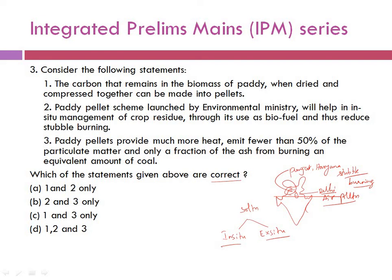Analyzing the statements: Statement 1 — paddy dried and compressed into pellets — is correct. Statement 2 says the paddy pellet scheme falls under incentive management, but that is wrong because it actually comes under incentive-based management. Eliminating statement 2 removes options A, B, and D. The correct answer is Option C — statements 1 and 3 only. Statement 3, that paddy pellets provide more heat and emit less than 50% particulate matter and a fraction of ash compared to coal, is also correct.